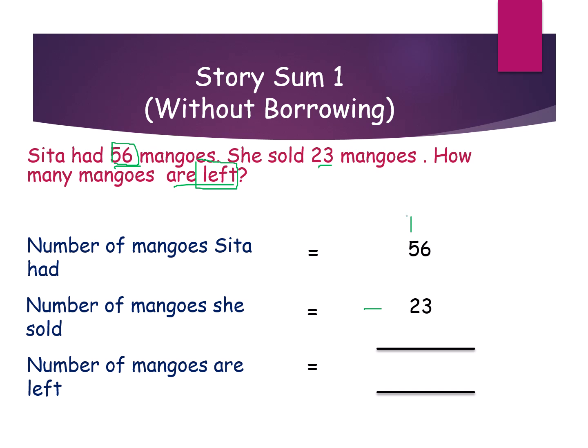Here we are writing on the top: tens and ones. Always we have to do ones place first. The ones place numbers are 6 and 3. The big number is on top. 6 is the biggest, so we are not taking borrowing. Keep it in mind: 6, big number, and open 3 fingers. Subtraction means going backward — before numbers. 6 before is 5, 5 before 4, 4 before 3. So 6 minus 3 is 3.